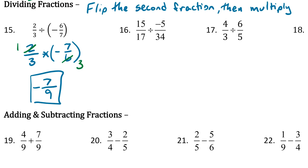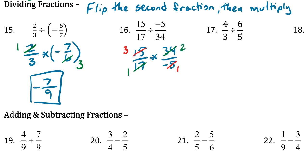For number 16, same thing — we're going to flip the second one. First one stays the same, times 34 over negative 5. Then start getting rid of anything we can. 5 goes into 15 three times, 5 goes into 5 once. I also see that 17 goes into 17 once and 17 goes into 34 twice. Top times top, bottom times bottom gives us 6 over negative 1. Don't forget there is that negative. 6 divided by negative 1 is just negative 6. We're done.